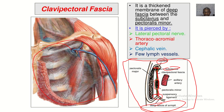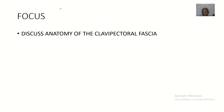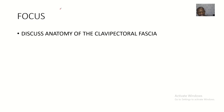So this is an overview of the anatomy of the clavipectoral fascia, covering the two parts: the costocoracoid membrane and the coracoaxillary fascia. That's it for this lecture — see you guys in the next one.